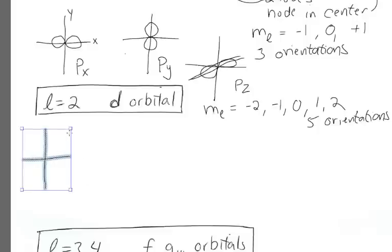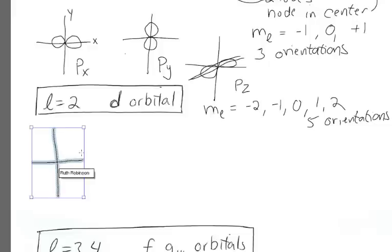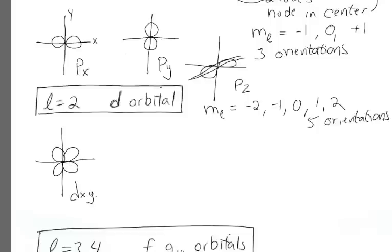So the first d orbital I'm going to talk about will have four lobes. And that orbital is referred to as a d, x, y, because it is in the x, y plane.